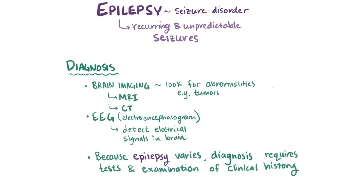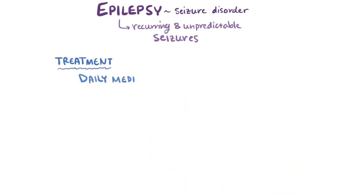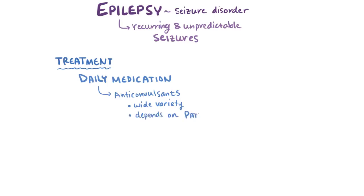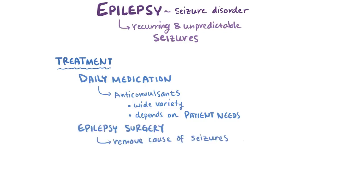Once epilepsy has been diagnosed, it's often treated with daily medication — the primary form being anticonvulsants, of which there are a wide variety of options with different targets in the brain. The choice is based on the specific needs of the patient, including factors like age, lifestyle, other health problems, and the category or subcategory of the epilepsy syndrome. Other treatment options include epilepsy surgery, where they'll remove what's thought to be causing the seizures, like a specific part of the brain or a tumor.